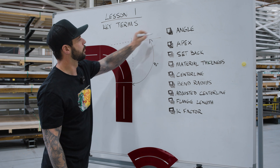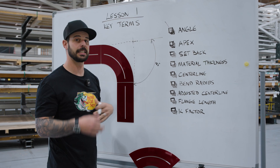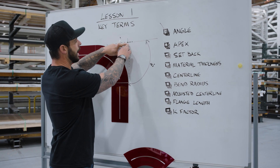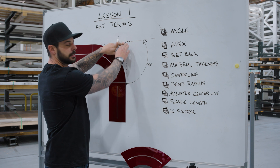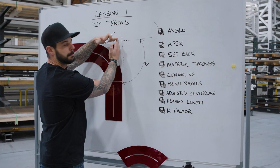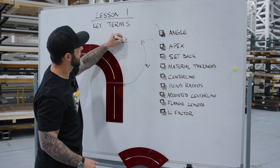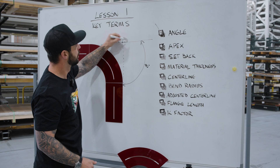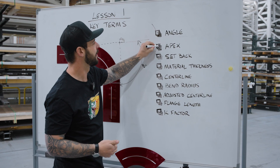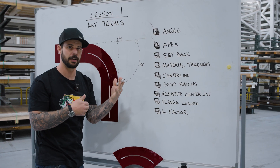The next thing is the apex. The apex is that point in space at which your two tangents meet. That apex point is a common reference point that we're going to use for a couple of different measurements.